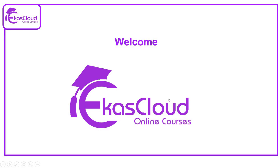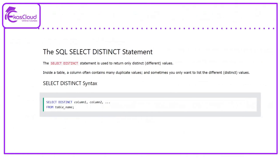Hi, welcome to ECAS Cloud. Today we will see the SQL SELECT DISTINCT statement. The SELECT DISTINCT statement is used to return only distinct values. Inside a table, a column often contains many duplicate values, and sometimes you only want to list the different values.